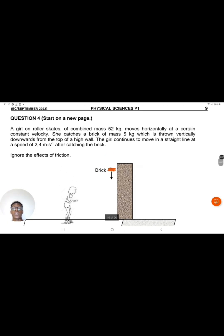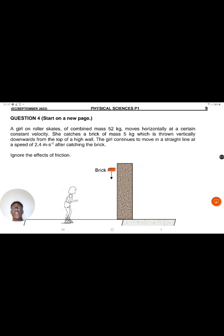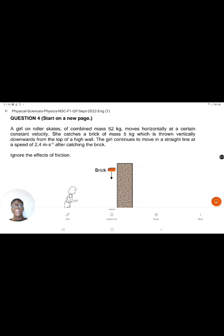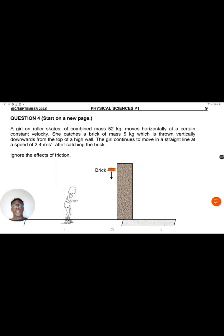We've actually been told twice that this is a closed system. First, we were told the girl moves at a constant velocity — constant velocity means zero acceleration, and zero acceleration means no net force. Second, we were told to ignore the effects of friction. Both of these confirm the system is closed.